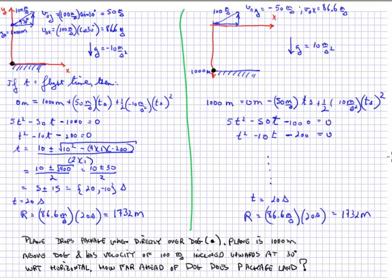I want to talk about a problem and solving it with two different coordinate systems. The problem is at the bottom. This is one of the assigned ones for Mastering Physics this past week. Imagine that you have a plane that drops a package when directly over a dog.